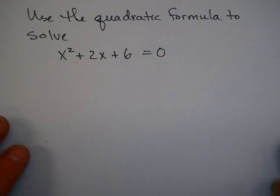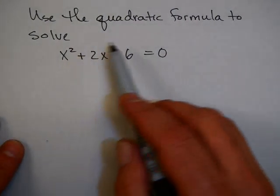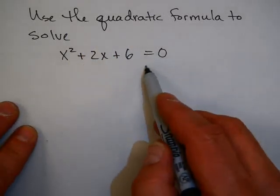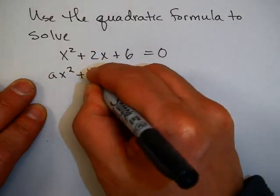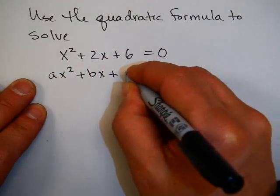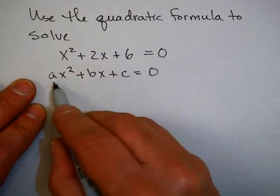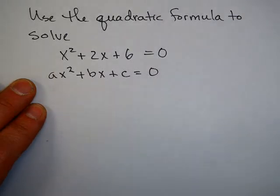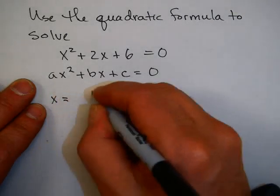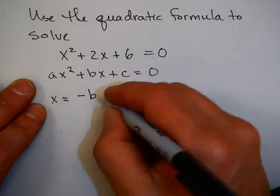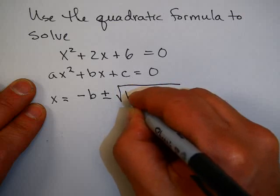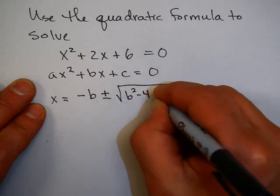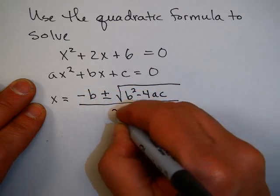Here's a problem that you might be familiar with: use the quadratic formula to solve this quadratic equation. You might recall the quadratic formula — if you have your equation in the form ax² + bx + c = 0, then the solutions are given by x = (−b ± √(b²−4ac)) / 2a.